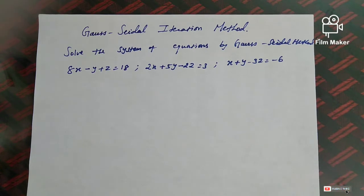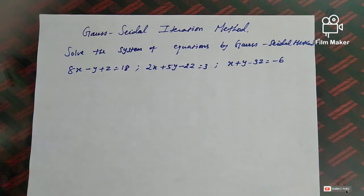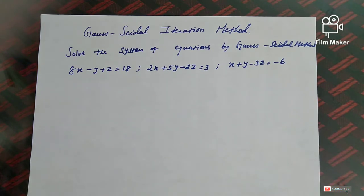In the iteration method, we first take an initial approximation. With that initial approximation, we apply some steps to get the correct or better solution. When the rule is applied repeatedly, each successive calculation determines the next approximation of the solution. This kind of procedure is called the iteration method. The successive approximations are called iterates. The iteration method is a self-correcting method because any error made in a computation is corrected in subsequent iterations.